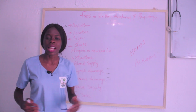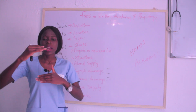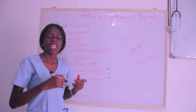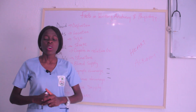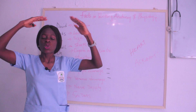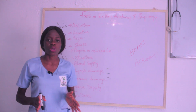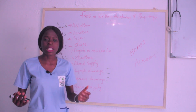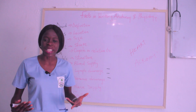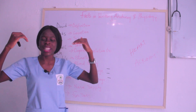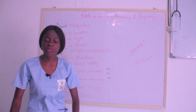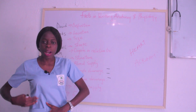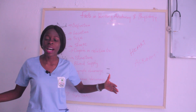Then O stands for Organ in Relation — what is at the right side, left side, above, and below the heart? Superiorly, we have the great blood vessels such as the aorta, pulmonary artery, and pulmonary veins. Inferiorly, at the bottom of the heart, you have the diaphragm. On both sides of the heart, you have the lungs.